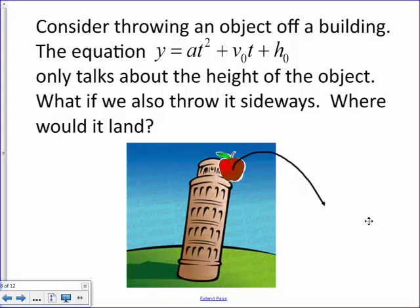All right. Let's just read through this and break this down. So it says, consider throwing an object off a building. The equation y equals at squared plus v sub o t plus h sub o only talks about the height of the object. What if we also throw it sideways? Okay. What do we mean by sideways? We don't mean that we're directly throwing it sideways. We're throwing it up in the air. But it's making a projectile, you know, that part of our parabola and coming down. It's going to come all the way down and hit the ground somewhere down here. Okay. But my projectile motion equation, instead of having an x, we have t because the x really represents t all the time. But our t here is going to represent time for our vertical parameter.